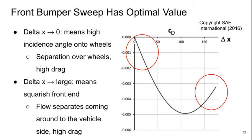Welcome to Part 2 of Lecture 5 of Bluff Body Aerodynamics. We left off thinking about this question of why there's an optimum value of delta x for reducing drag with regards to bumper sweep.